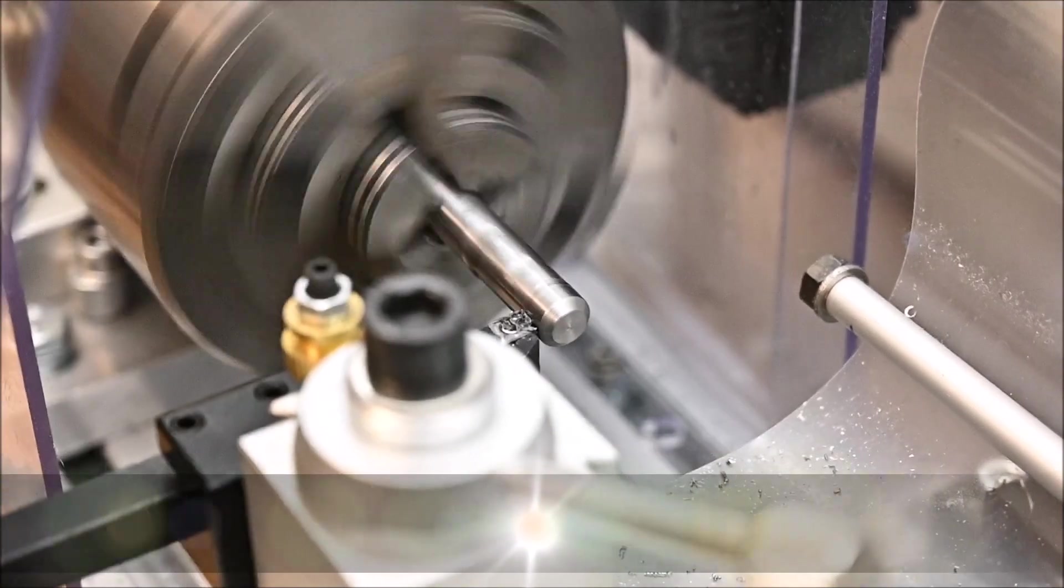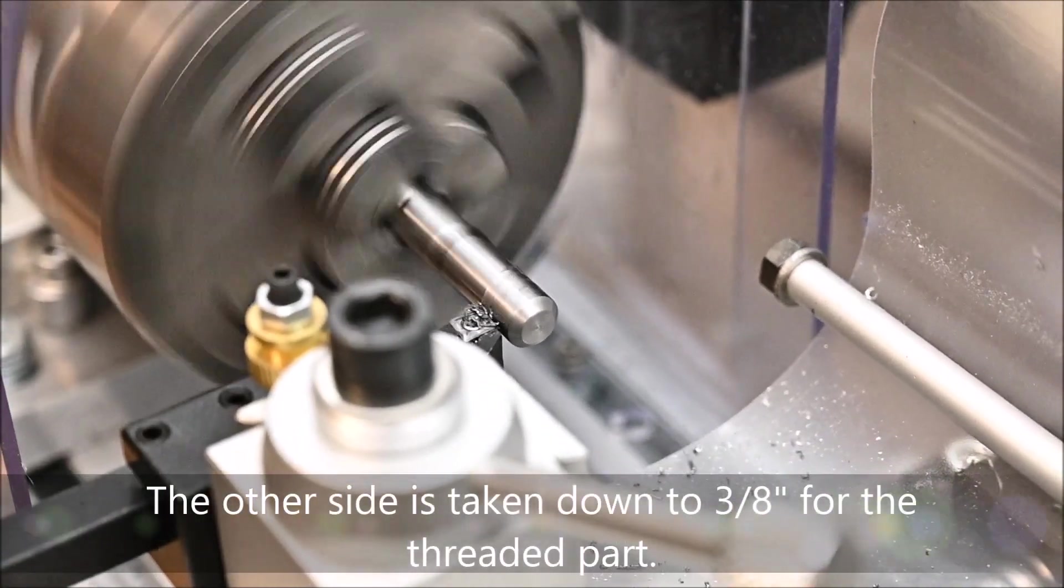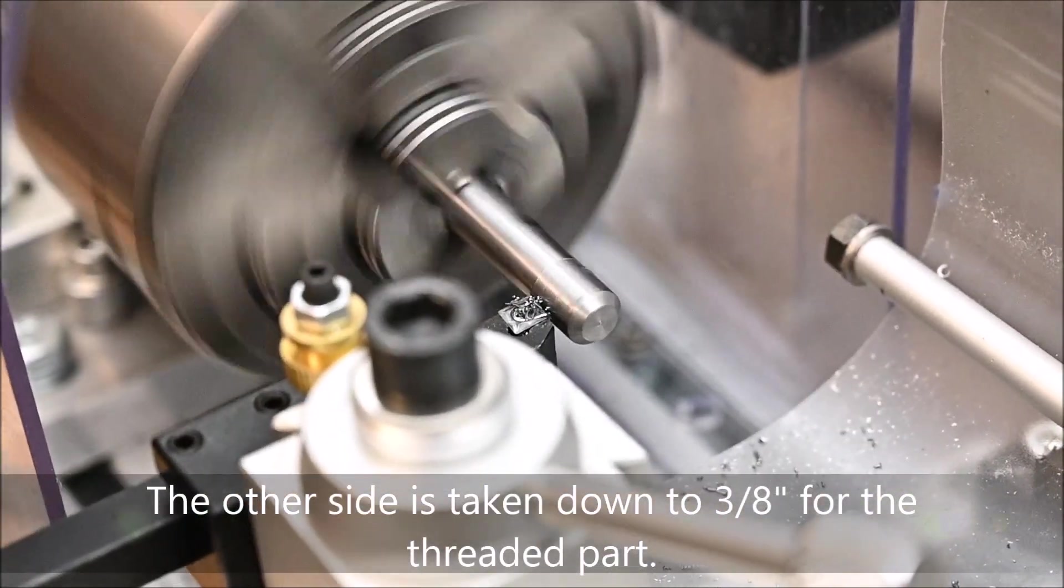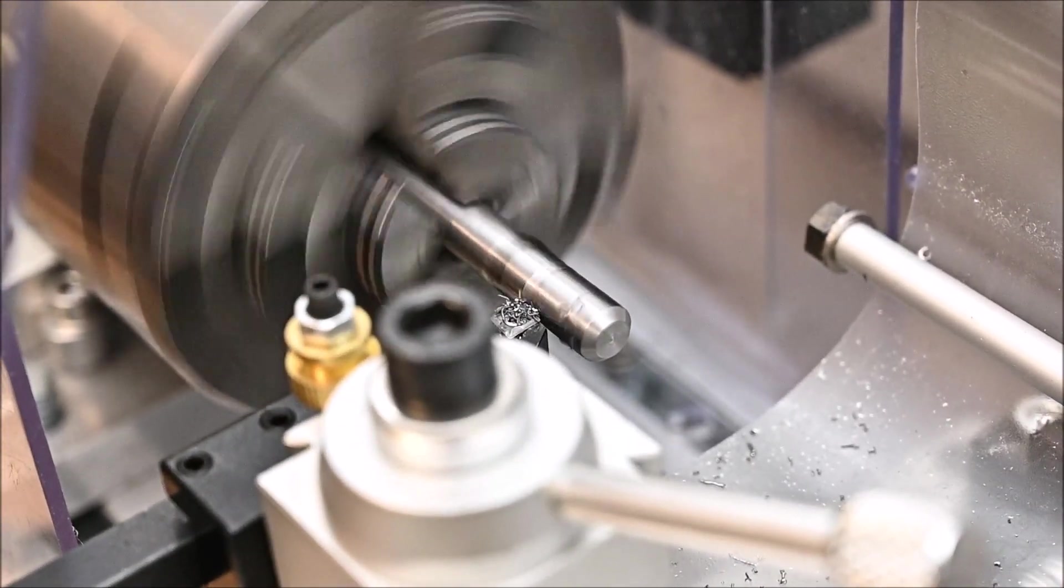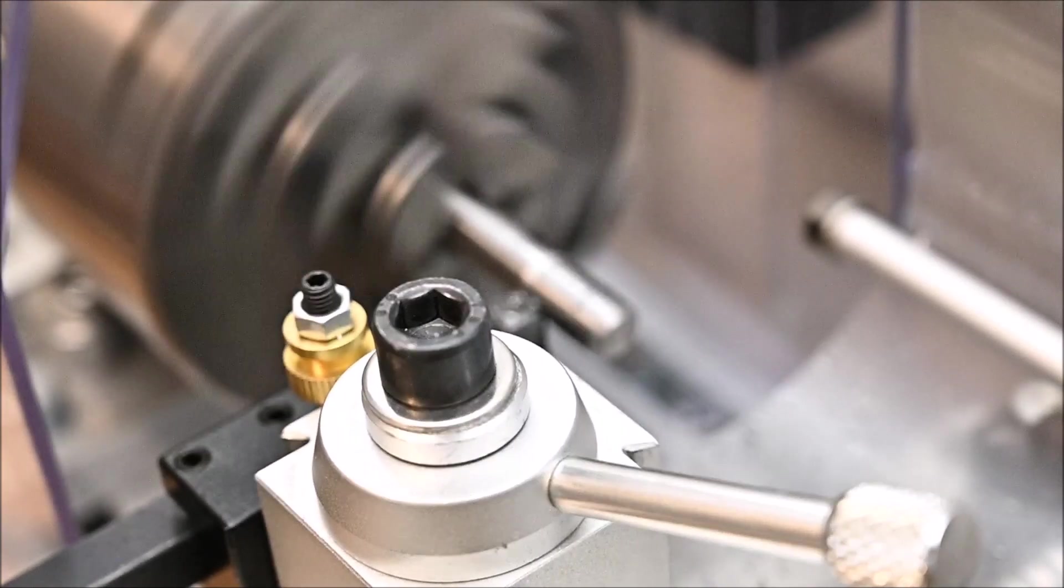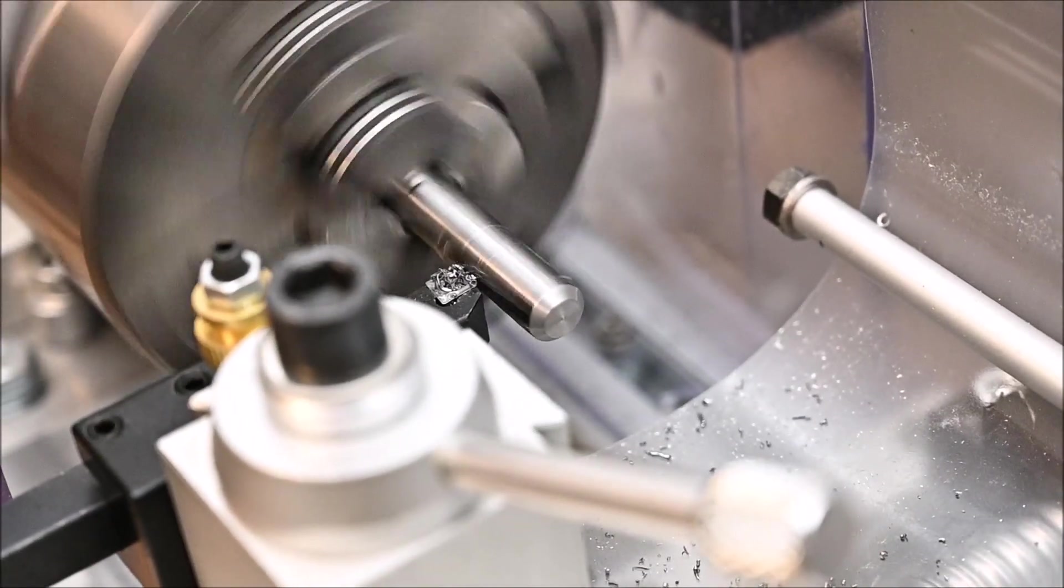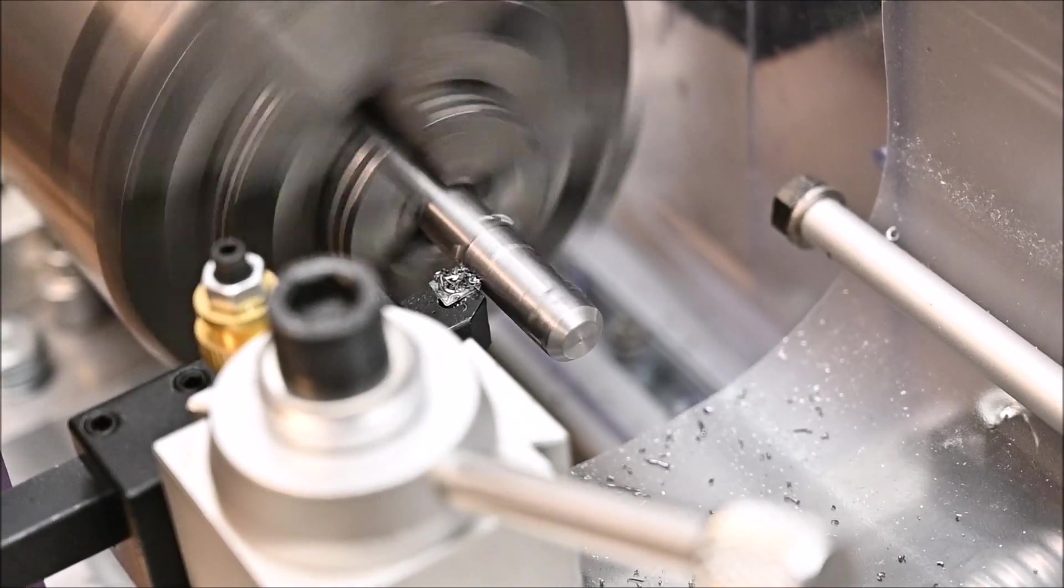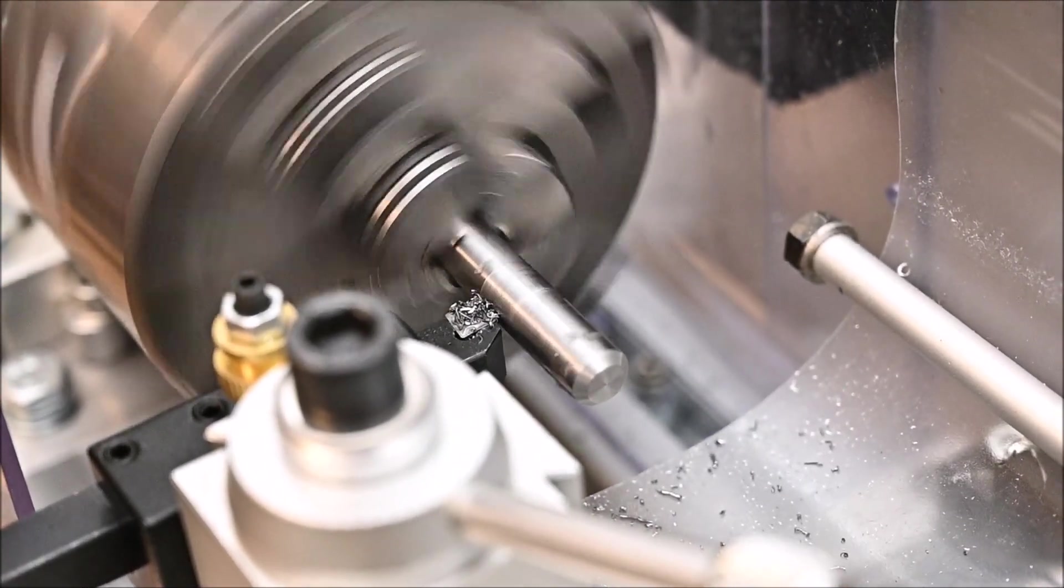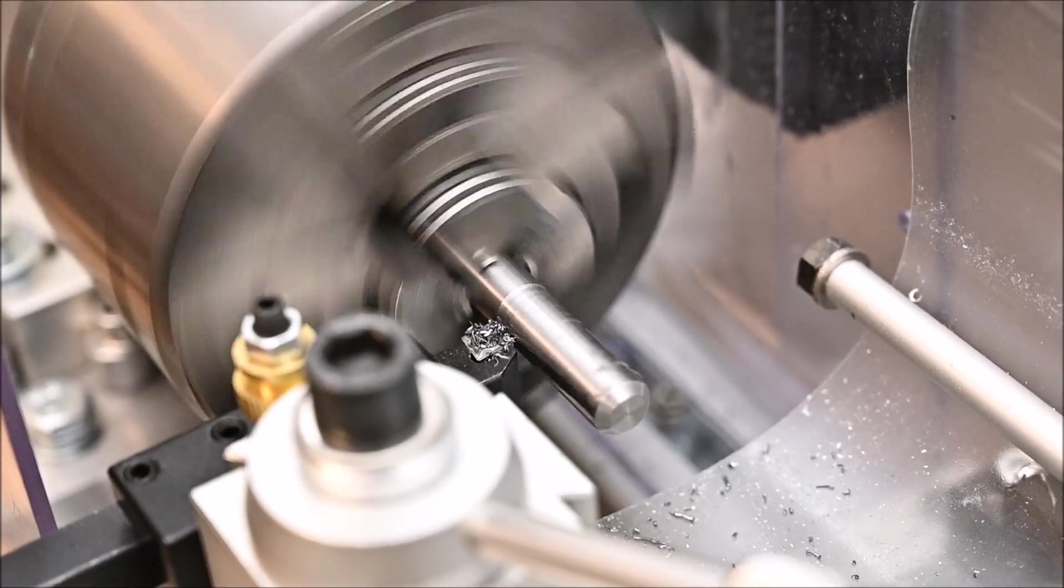And now it's time to make the other side. Yeah, I already chucked it and faced this side, so here I'm just showing the cutting to the diameter. Basically it's the same as before with the aluminum rod.